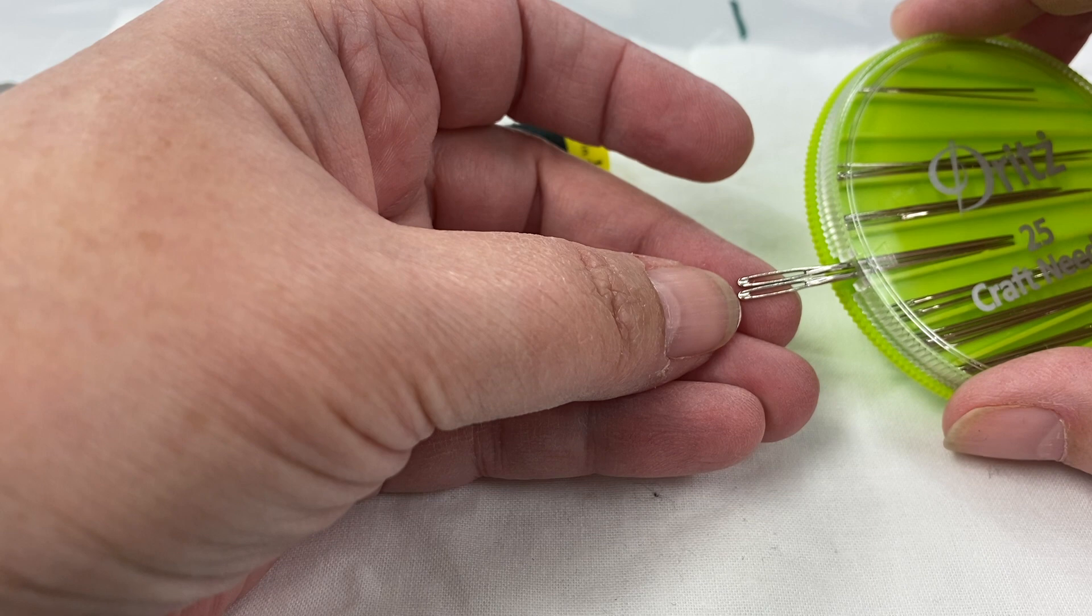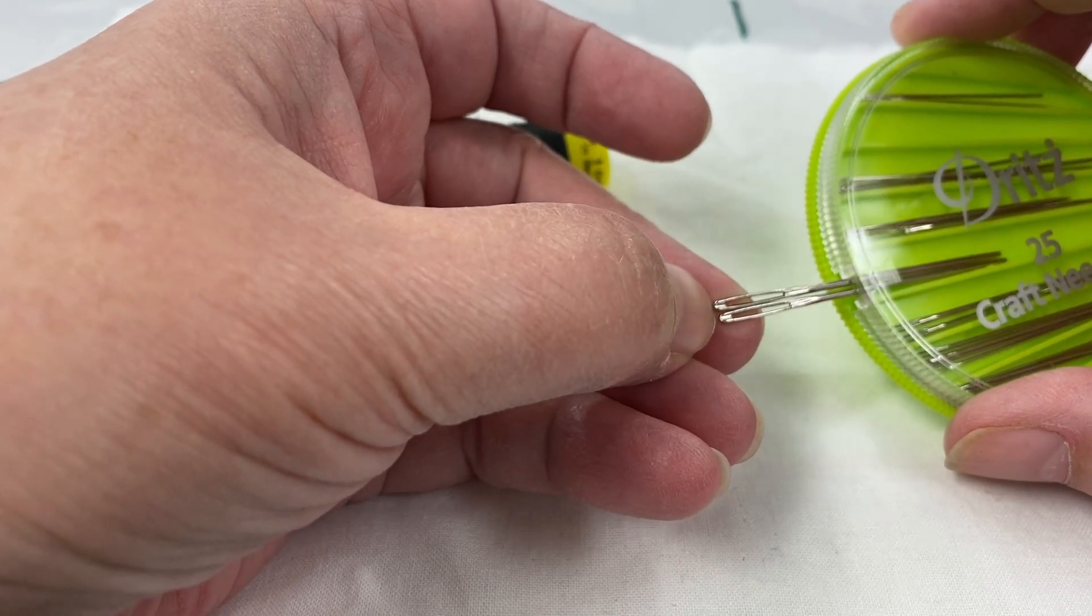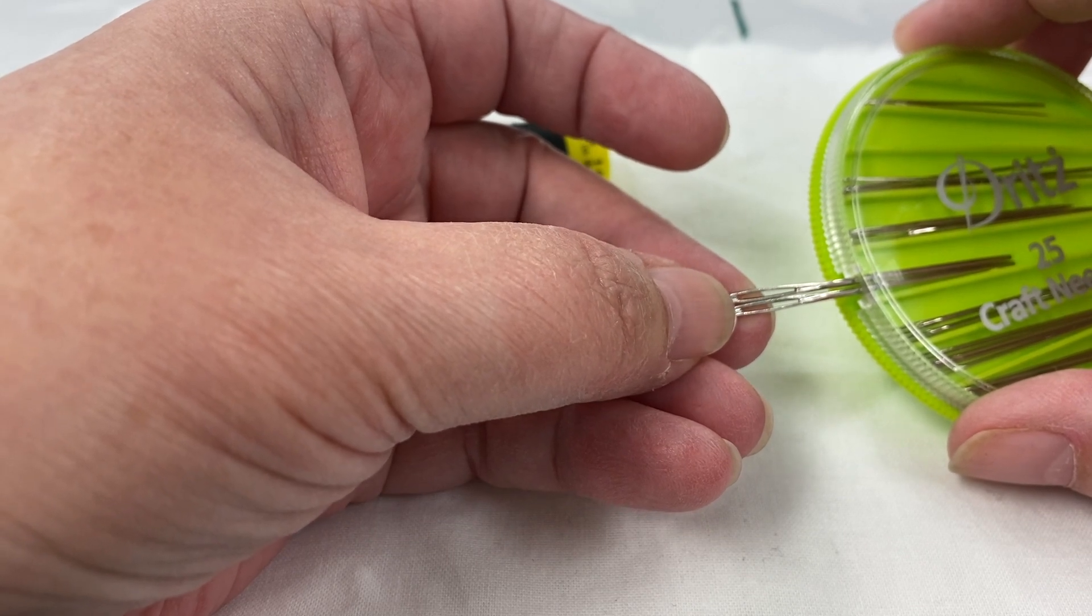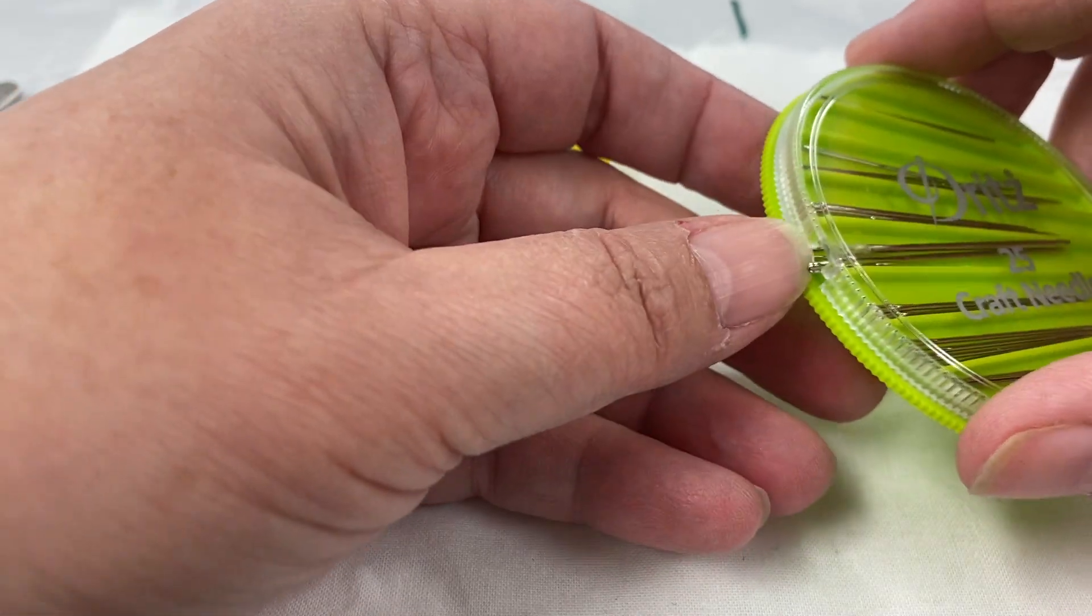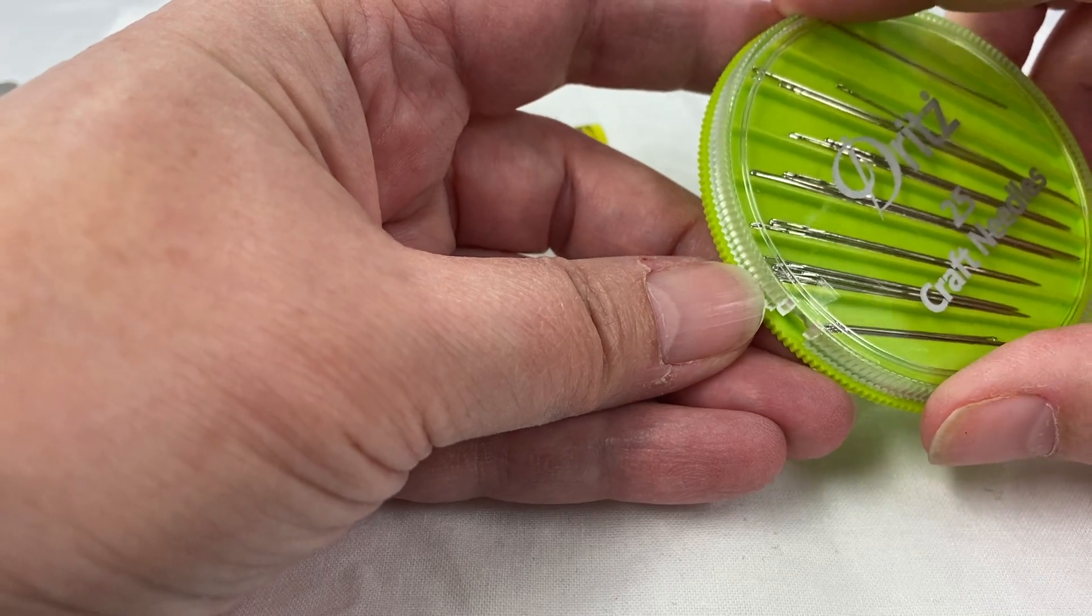But needles are very much like if you purchase nails to put something together, where you're putting a hole in your fabric. This needle is going to put a giant hole in the fabric and it's going to be kind of overkill for most of the sewing that we're going to be doing.